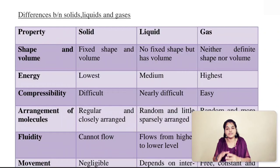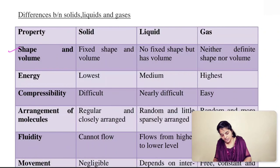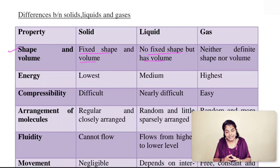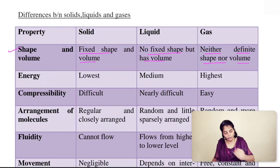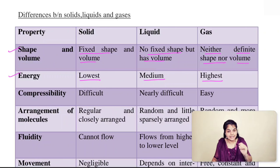The first property is shape and volume. Solids have a fixed shape and volume, whereas liquids do not have a fixed shape but have volume — liquids take the shape of the container in which they are placed. Gases neither have a definite shape nor volume. Regarding energy, the energy of particles is lowest in solids, medium in liquids, and highest in gases.